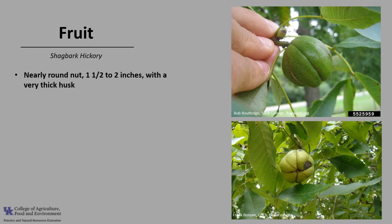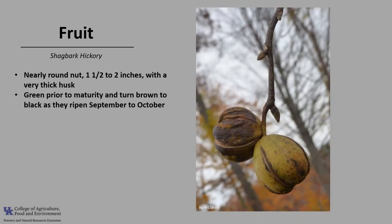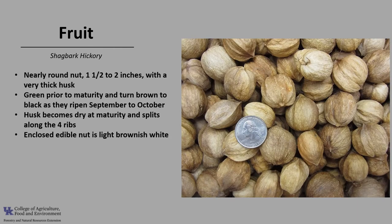The fruit is a nearly round nut, about one and a half to two inches in diameter, with a thick husk. The husk has four distinct ribs, as you can see in the photo. They are green prior to maturity and turn brown to black as they ripen, with the fruit ripening in September to October. The husk becomes dry at maturity and splits along the four ribs. The enclosed nut is light brownish white, with a relatively thin shell on this sweet, delicious, edible seed inside.